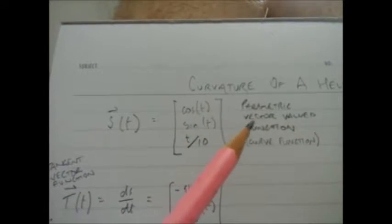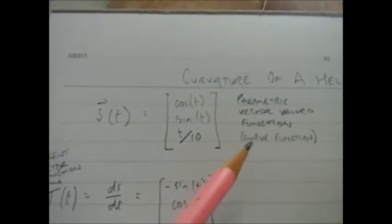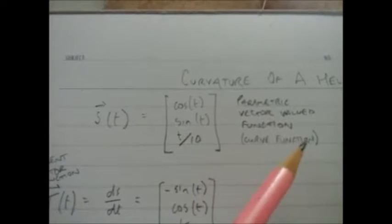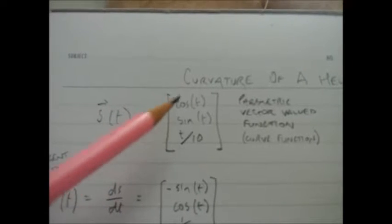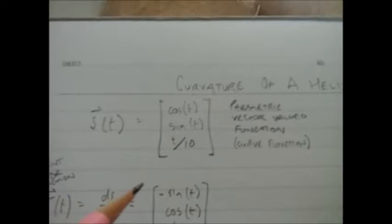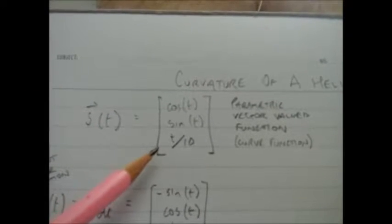Now looking at this function here, it's a parametric vector-valued function. I'm going to call this the curve function. You can see there's a vector there with three components: x, y, and z. Each time I put a t into here, I'll get a point in 3D space.